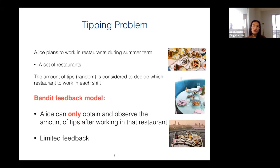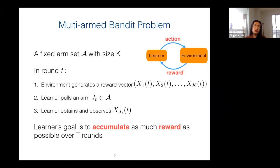I always use this example to explain the bandit feedback model. Suppose a student wants to work in restaurants during the summer, and she can pick a restaurant from a set of restaurants. The amount of tips decides which restaurant she wants to work in each shift. Under the bandit feedback model, she can only observe the amount of tips after working in that specific restaurant — she cannot observe tips from restaurants she didn't work in. This is the bandit feedback model: at the end of each round, only a limited amount of information is revealed by the environment.